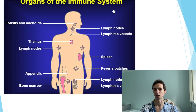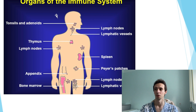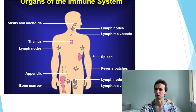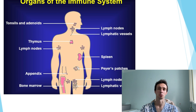Lymphocyte production, maturation, and training occurs in our immune organs. These are tonsils, lymph nodes, thymus, spleen, of course bone marrow, and different lymph tissues of our gut.